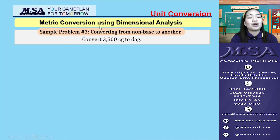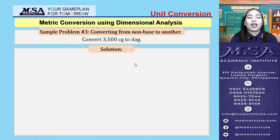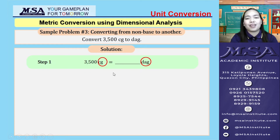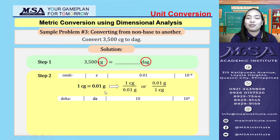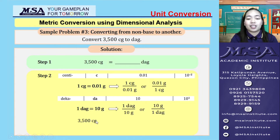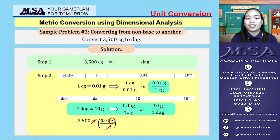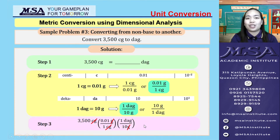Now let's move on to converting from one non-base unit to another. We are asked to convert 3,500 centigrams into decagrams. Since the table has no direct centigrams-to-decagrams factor, our plan is to first convert centigrams into the base unit grams, then convert grams into decagrams. Proceeding with the calculation gives us an answer of 3.5 decagrams.